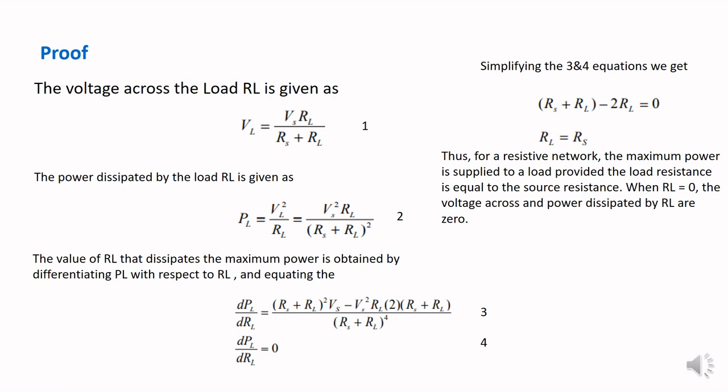VL is equal to VS multiplied by RL divided by RS plus RL — this is equation number one. Next, we find how much power is dissipated by the load resistance RL. The formula is PL equals VL squared divided by RL. Substituting equation one into this, we get PL equals VS squared times RL divided by (RS plus RL) whole squared — this is equation number two.